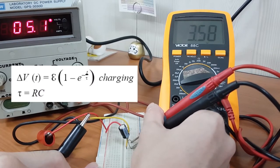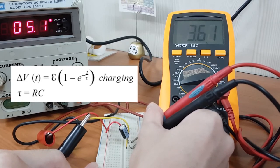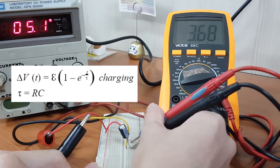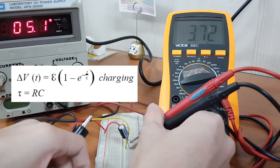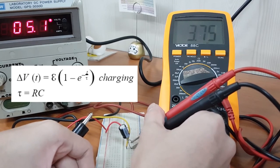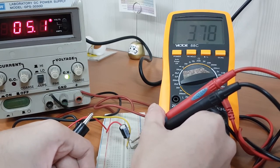For the charging process, the time constant tau for this circuit is equal to RC. For our case, it's 22 seconds. And this tau is equal to the time for this potential or voltage V to reach 63% of its final value.